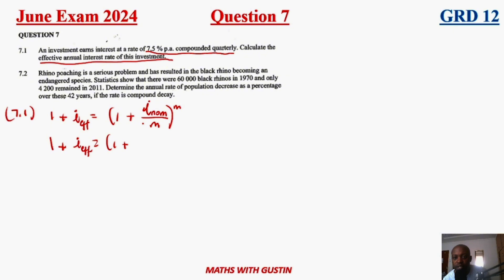One plus this is our nominal here. If you divide this by 100, remember you must remove the percentage, so it's going to be 0.075 divided by four, since they said quarterly. How many quarters are there in a year? Four. So you're going to have four here and then four there.